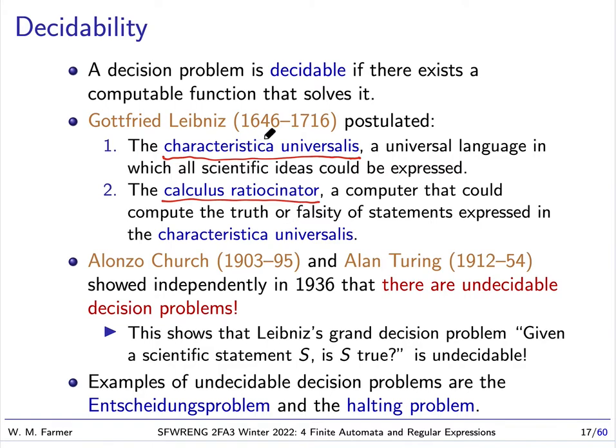It wasn't until the early 1900s, in fact 1936, that anyone was able to show that Leibniz's dream was an impossibility. The reason it was shown in 1936 that Leibniz's dream was impossible is because Alonzo Church and Alan Turing, independently—Church published his paper in 1936, Turing in 1937—showed that there are undecidable decision problems. There are decision problems for which there are no algorithms to solve them. This basically shows that Leibniz's grand decision problem—given a scientific statement, is the statement true—is undecidable, because sub-problems of this grand problem are undecidable.